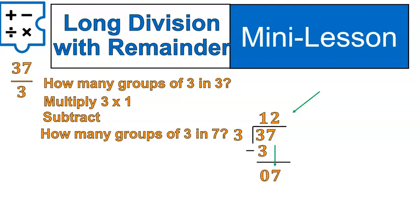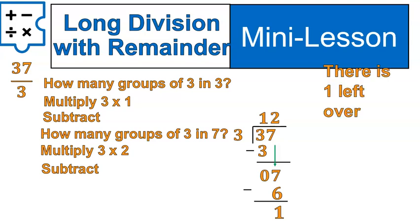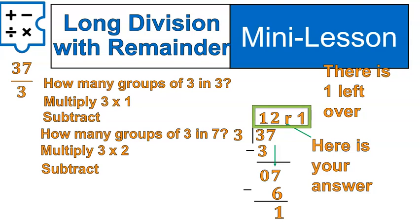We'll bring that 7 down and ask ourselves, how many groups of 3 inside of 7? There's 2 groups of 3 inside of 7. We multiply the 3 times 2 to get 6. When we subtract, we end up with a 1. That 1 is left over. Basically, what that's saying to you is, 37 divided into groups of 3 means that we will have 12 even groups and 1 left over. That is your full answer. 12 remainder 1.